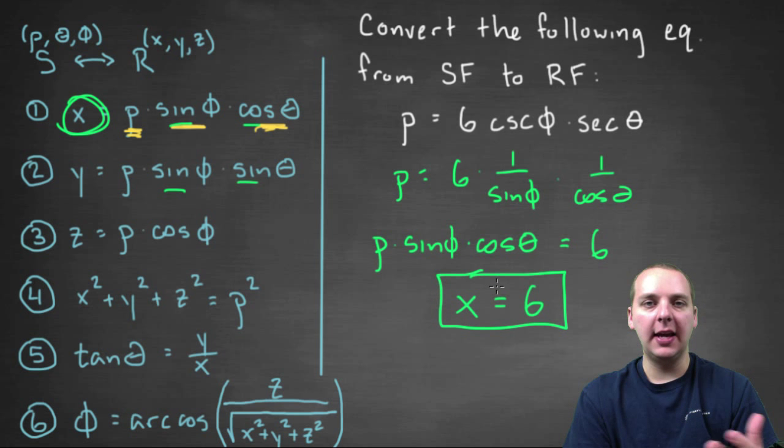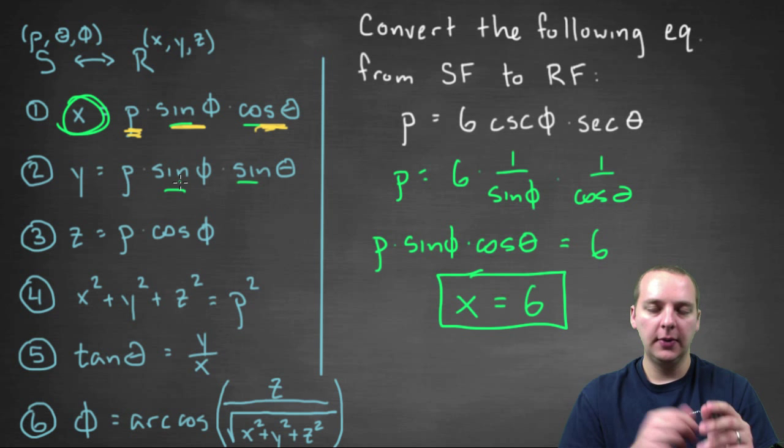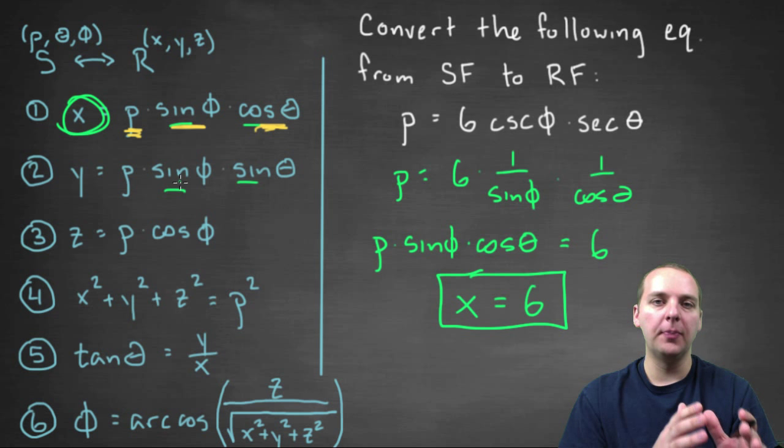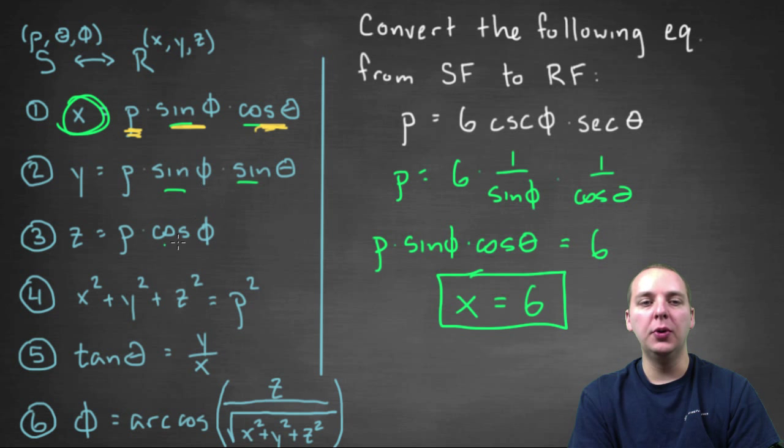Now we obviously can't do every example ever conceived or whatnot, but you see the general process. The general process is you switch out terms that are in spherical form for terms that are in rectangular form. Some of these can be a little tricky, so it takes a lot of practice. Sometimes you have to use a lot of intuition or cleverness to rewrite something in spherical form back in rectangular form. But this was a good straightforward example.